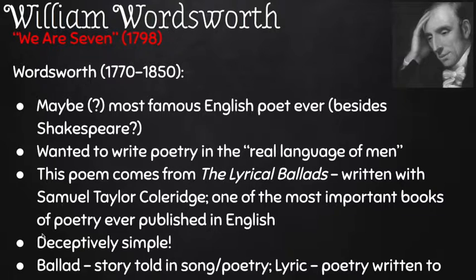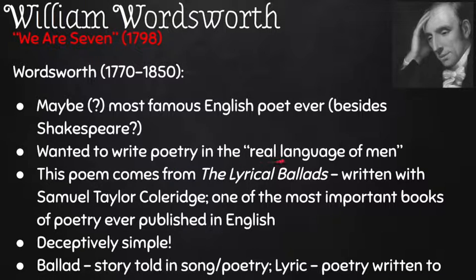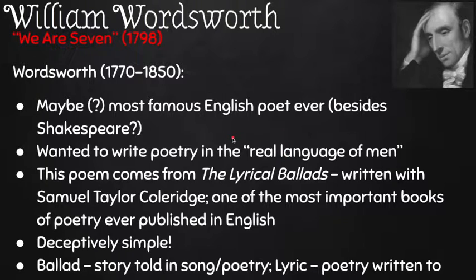Back to Wordsworth. Here's what's really important to know about him: he really wanted to write poetry in the, quote, 'real language of men.' Like many people of his upper-class status and high level of education, he didn't really know many 'real men' to begin with, so he's sort of making up what he thinks poor people or the peasants would sound like — imagining and fantasizing about what they would sound like, but he's trying. This poem, 'We Are Seven,' comes from a collection called The Lyrical Ballads, written with Samuel Taylor Coleridge, another poet who wrote 'The Rime of the Ancient Mariner.'